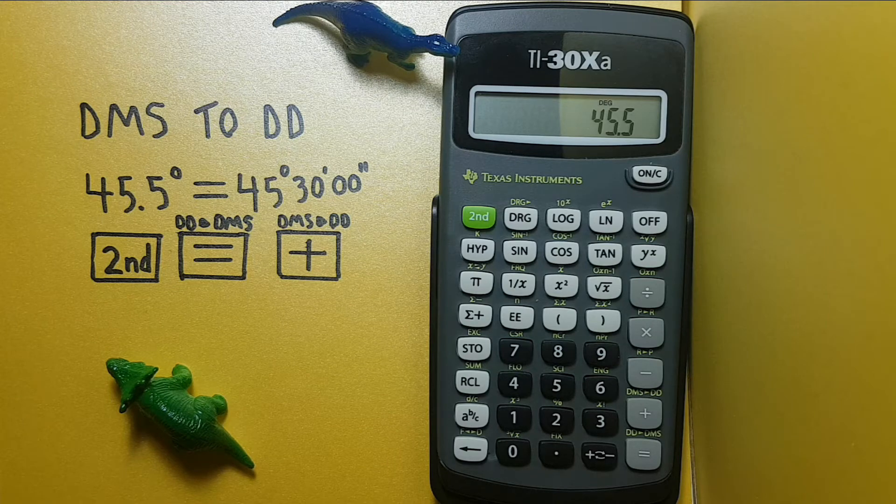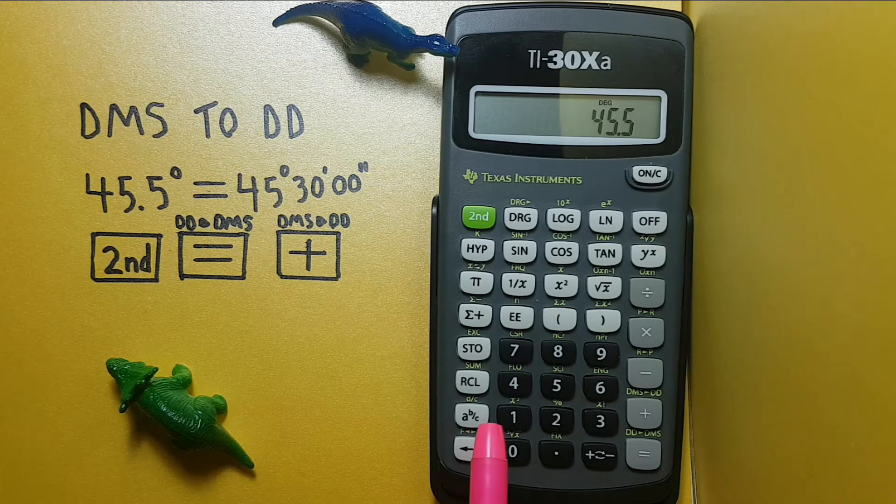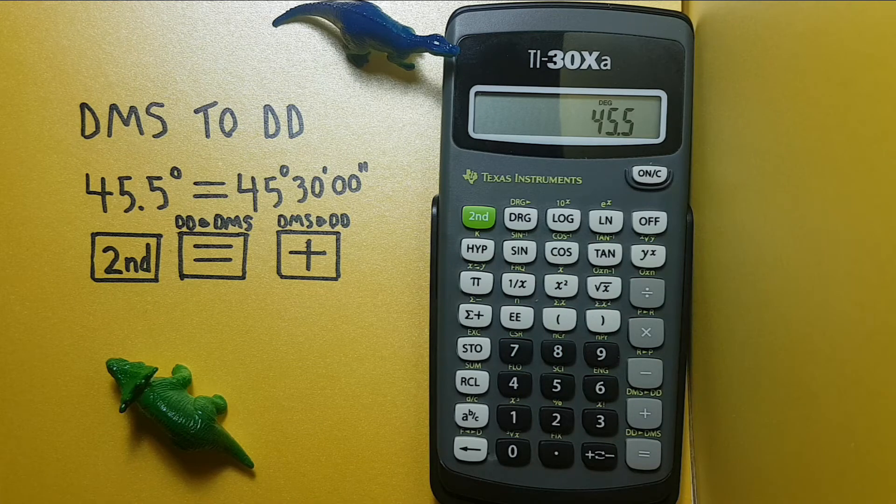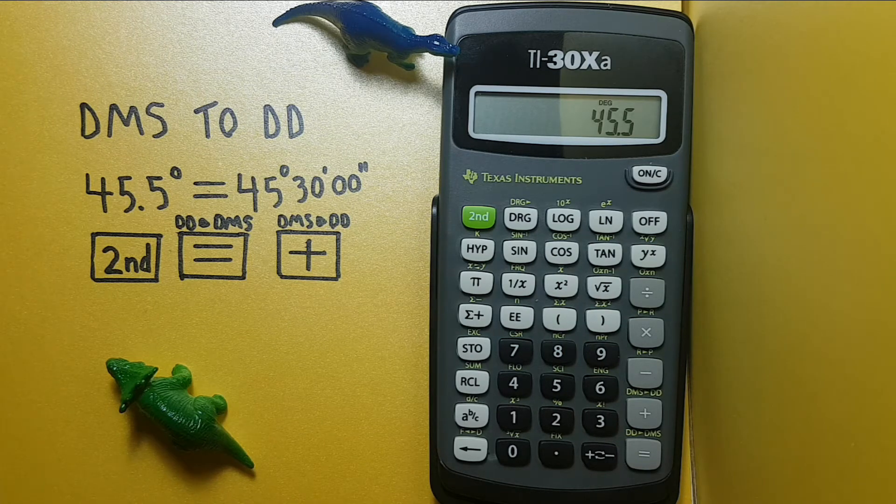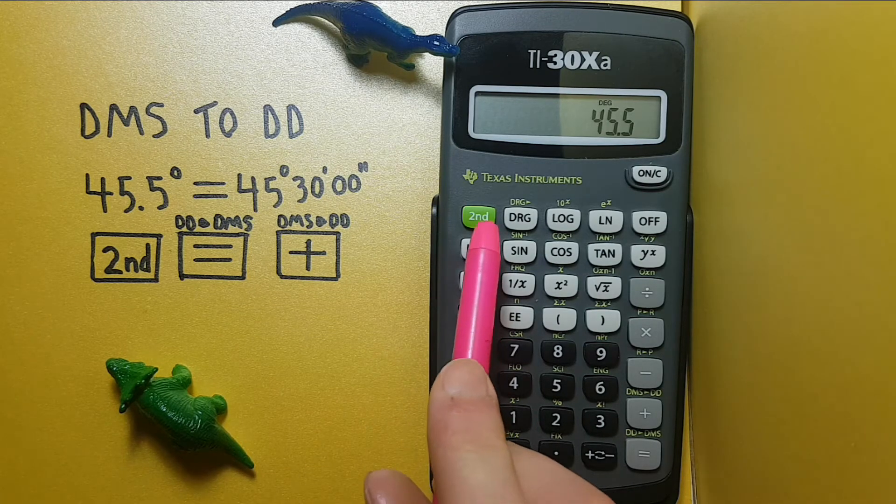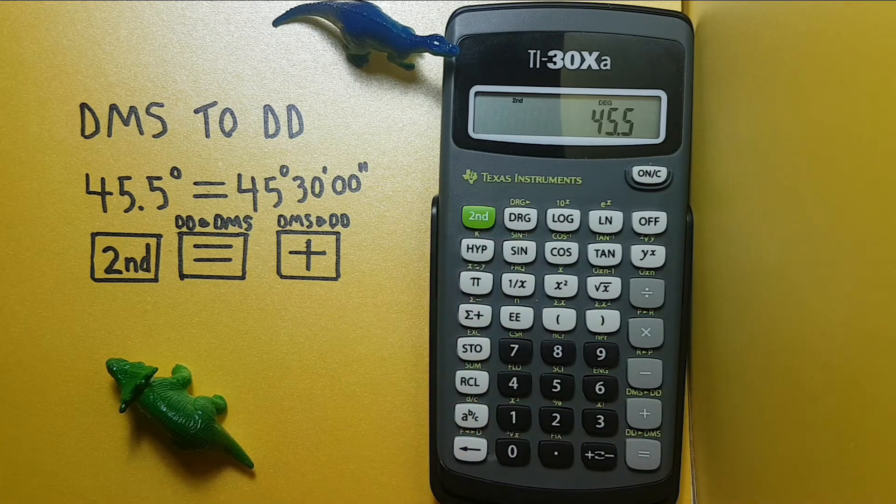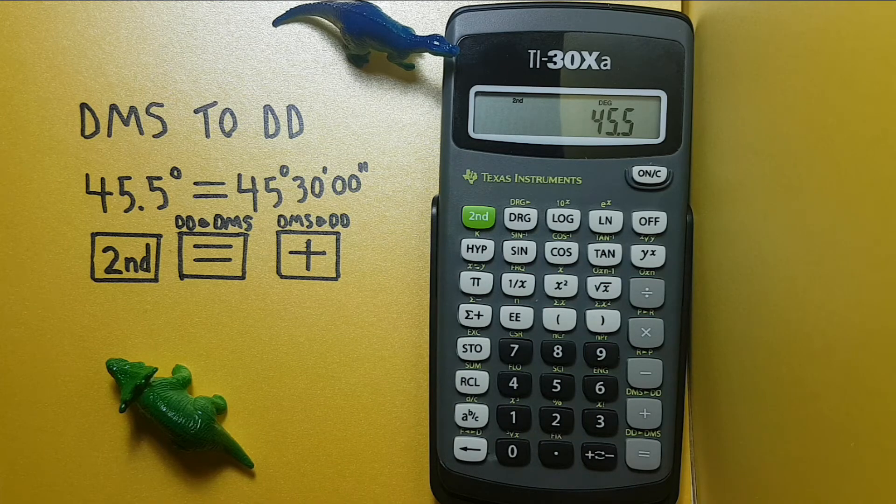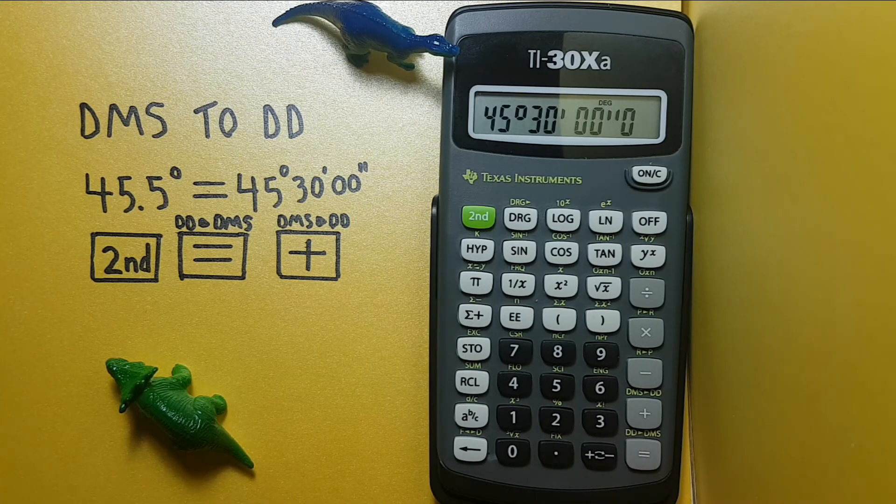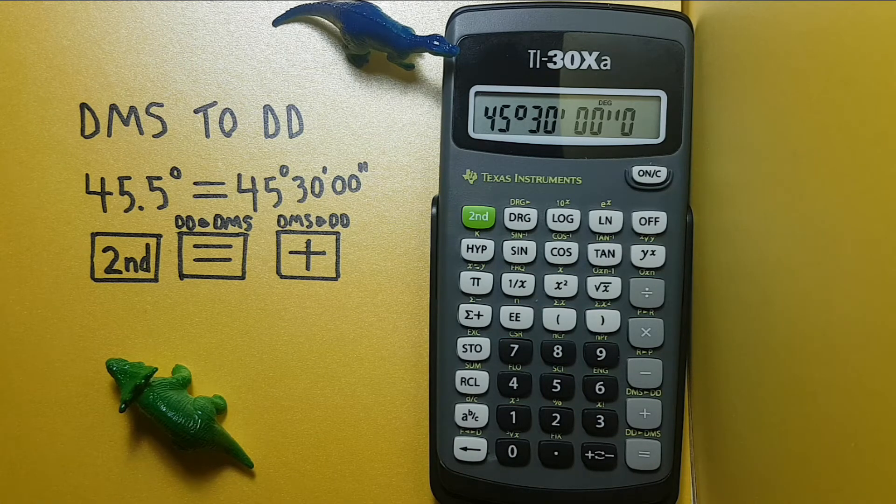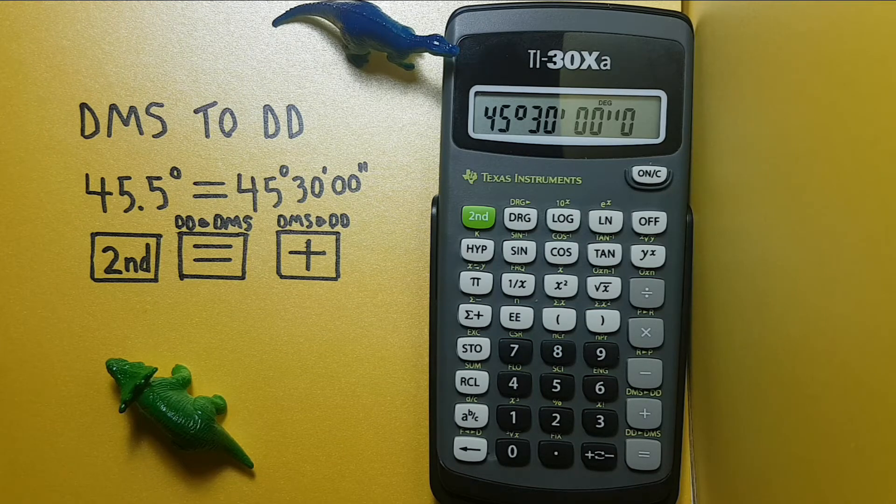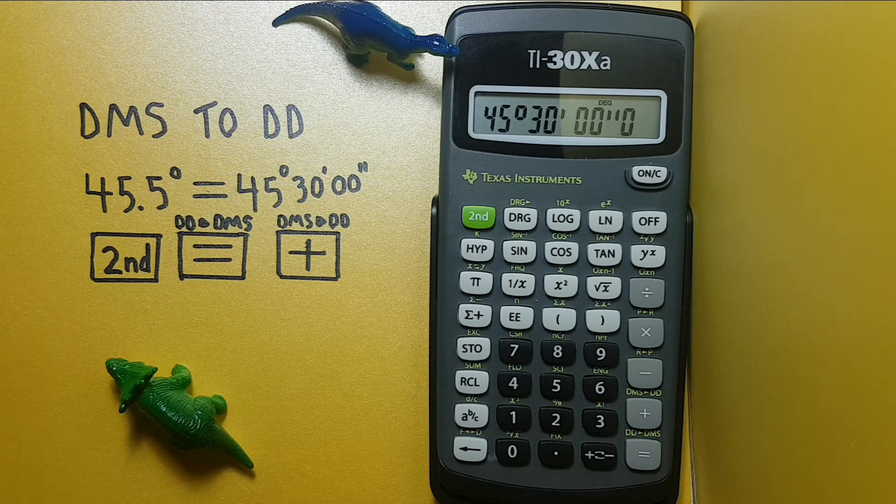Here's an example of how we would do that. If we have 45.5 decimal degrees and want to convert that to degrees, minutes, seconds, we would simply press second function, then the equals key. And we can see our 45.5 degrees has converted to 45 degrees, 30 minutes, and 0 seconds.